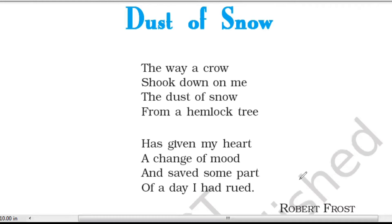As a result of the motion caused by the crow's arrival, some of the snow on the treetop falls on the speaker like rain. Since the snowflakes are very light and tiny, the poet thinks they look like white, immaculate dust particles — resembling dust falling on him. In the second stanza, the speaker describes how these fallen snowflakes have affected him: his mood is changed.